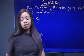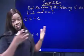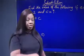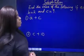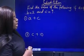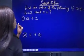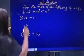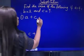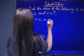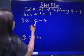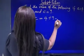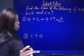Substitution means replacing: instead of using one thing, replace it with another. Find the value of the following, given that a equals 4, b equals 2, and c equals 9. The first one says a plus c. That equals — instead of a, we write 4, and instead of c, we write 9. That's 4 plus 9, which equals 13. So that's substitution.